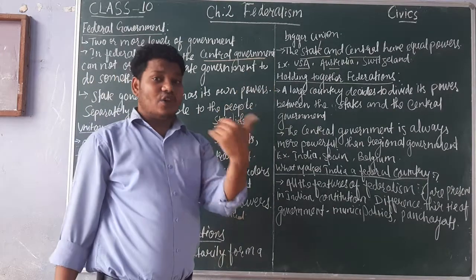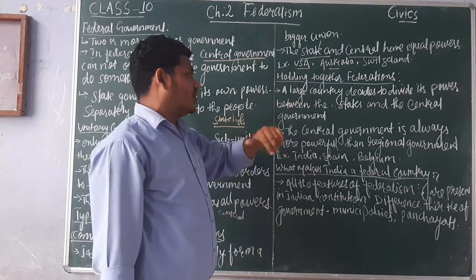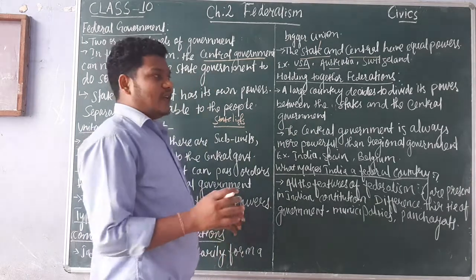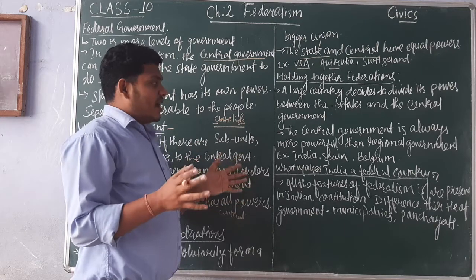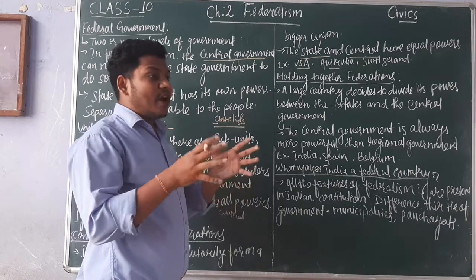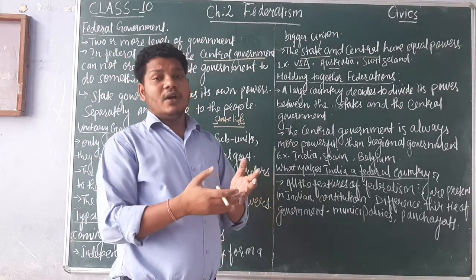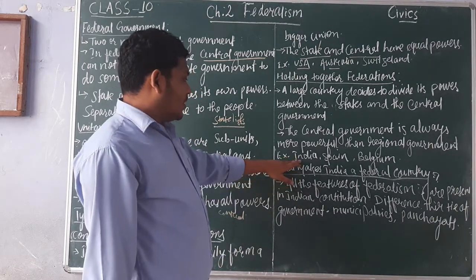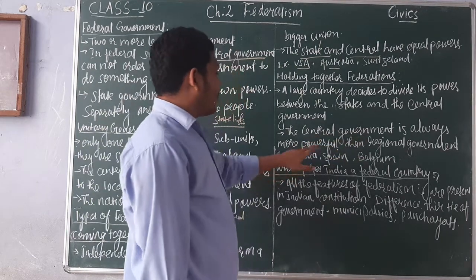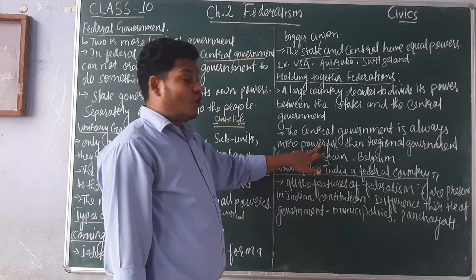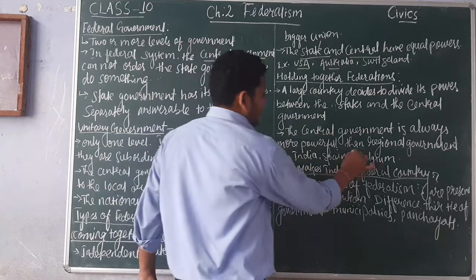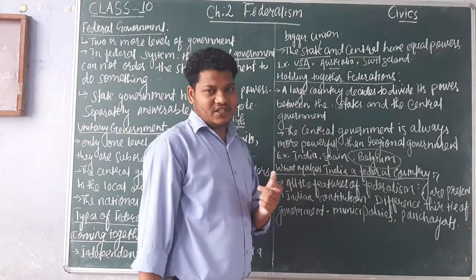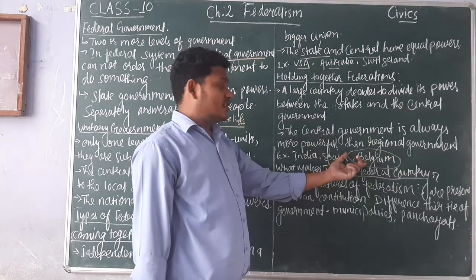The second type is holding together federation, which is the case of India. A large country decides to divide its power between the state and central government. India, Spain, and Belgium are examples of bigger countries where they divide powers between their subordinates — at central, state, and local levels. In this type, the central government is always more powerful than the state government. Belgium has already been studied in the power sharing chapter.